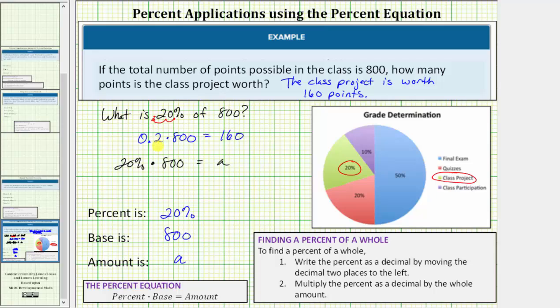We convert the 20% to a decimal, which would be 0.2. So we have 0.2 times 800 equals a. Notice how this is the same product that we used in our first method, so we know a is equal to 160, telling us the class project is worth 160 points.